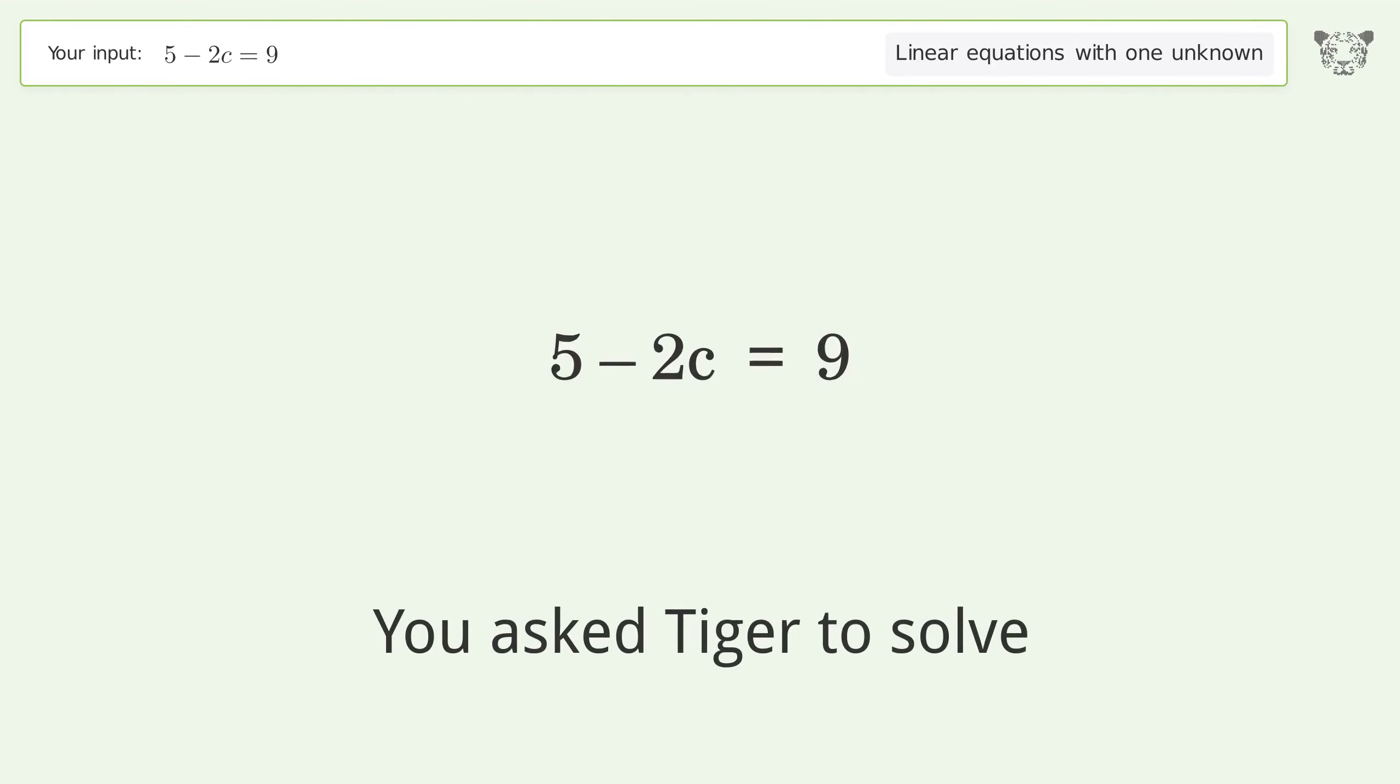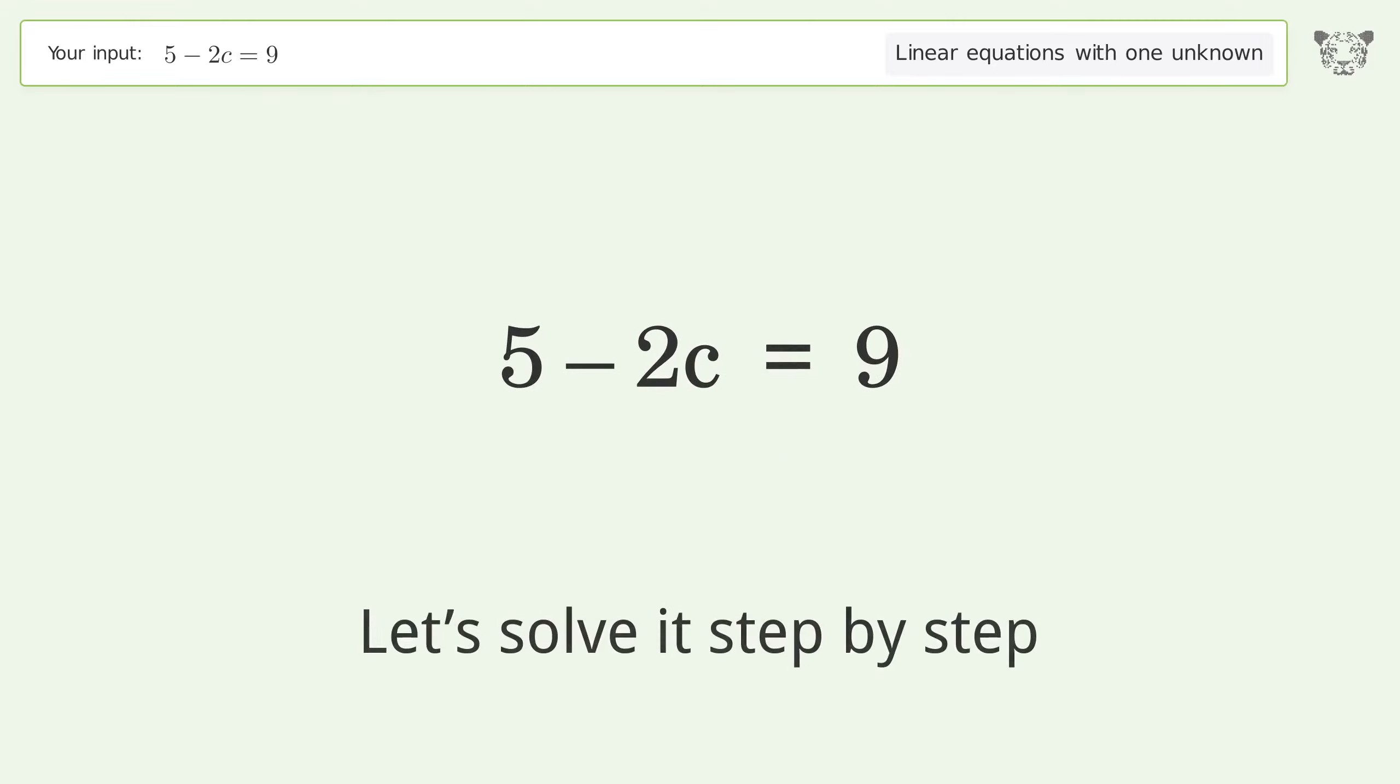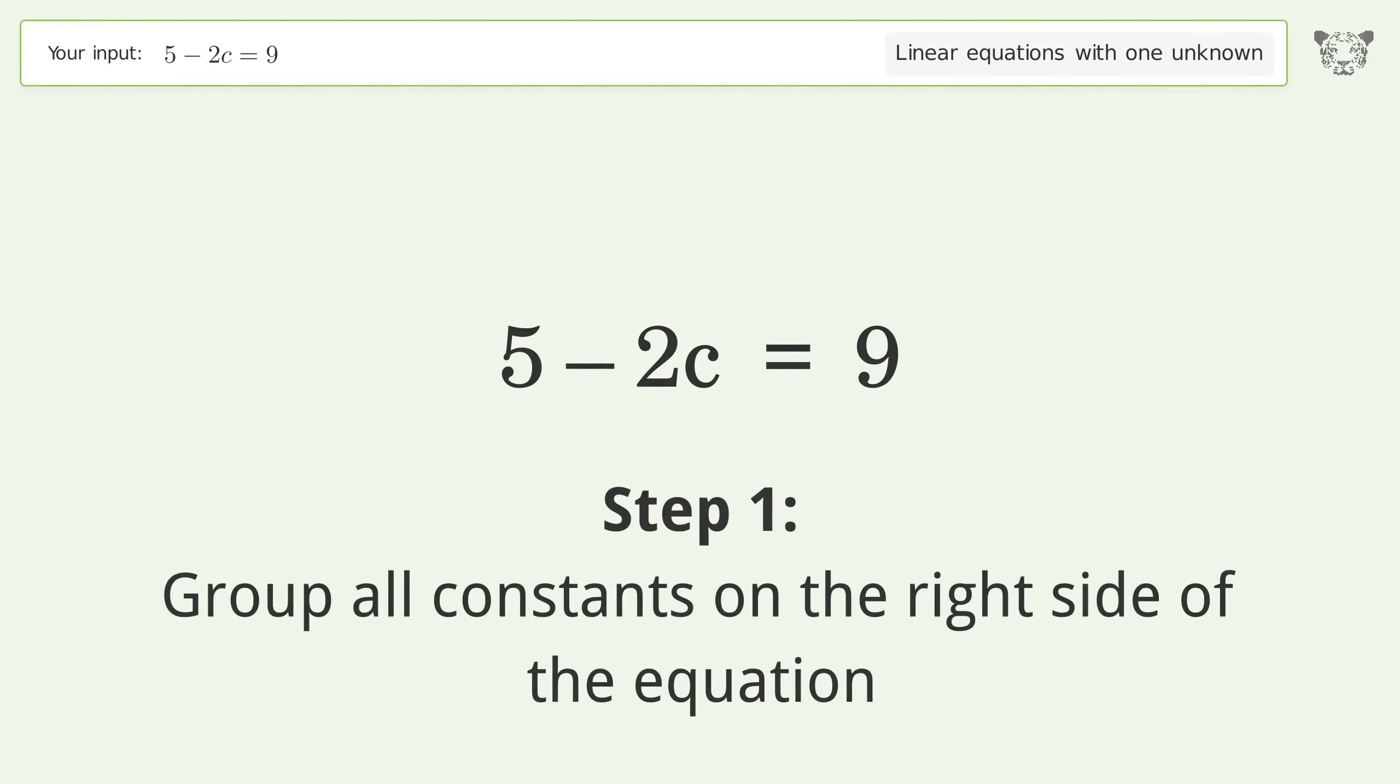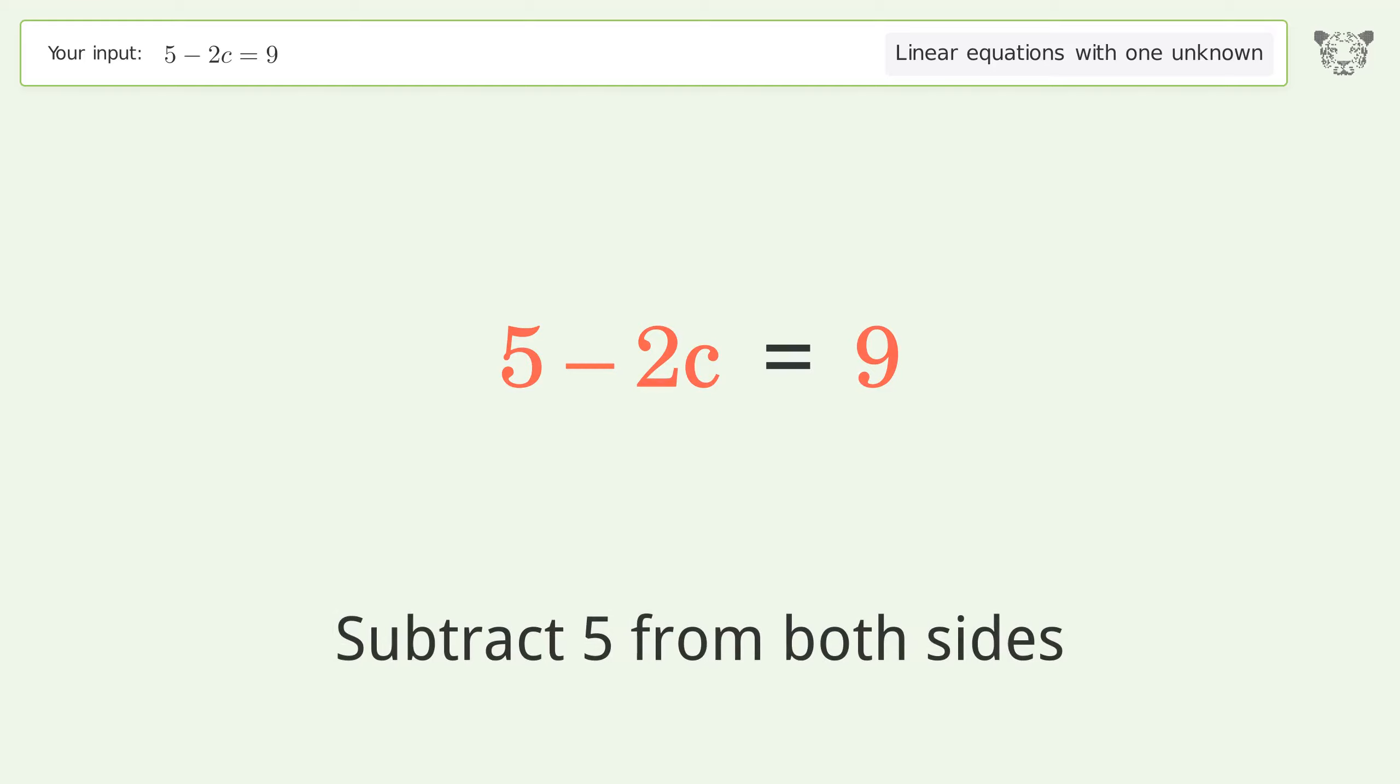You asked Tiger to solve this. This deals with linear equations with one unknown. The final result is c equals negative 2. Let's solve it step by step. Group all constants on the right side of the equation. Subtract 5 from both sides.